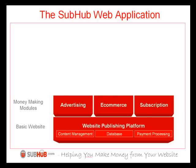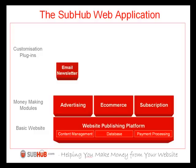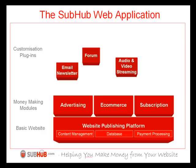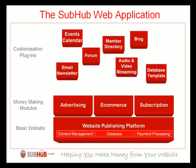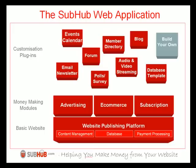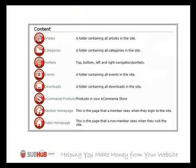Then it's time to consider what other functionality and features you need to make the site appeal to your audience. Some of the additional functionality you may consider includes an email newsletter, a forum, audio and video streaming, a content database, a blog, a member directory, an events calendar, polls and survey capability, or maybe you want to build your own application to plug into your core platform. And finally, all this functionality needs to be brought together under one control panel so it's easy and quick to manage your site.